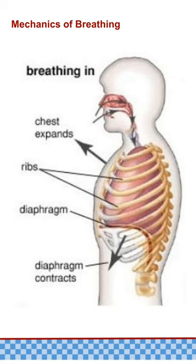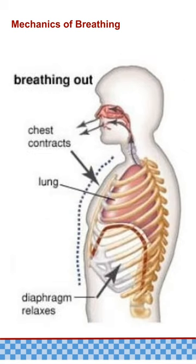Breathing, also known as ventilation, involves two main phases: inspiration and expiration. During inspiration, the diaphragm contracts and flattens while the external intercostal muscles contract, causing the ribcage to move upward and outward. This increases the volume of the thoracic cavity, which lowers the intraalveolar pressure, allowing air to flow into the lungs. During expiration, the diaphragm and external intercostal muscles relax, and the elastic recoil of the lungs and chest wall causes the thoracic cavity to decrease in volume, raising the intraalveolar pressure and leading to the expulsion of air from the lungs.